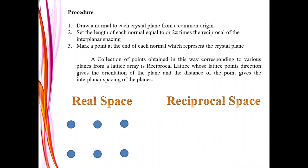Let us look at an animation showing how real space is mapped into a reciprocal lattice. Consider equally spaced lattice points in real space; choose an origin and define the (1,0) plane. Draw a normal to that plane — it touches the plane at a distance a. Find the reciprocal of a, multiply by 2π, and call it a*. Then, in a separate space — called reciprocal space — mark a point as (1,0). The (1,0) plane in real space is thus represented as a single point in reciprocal space.